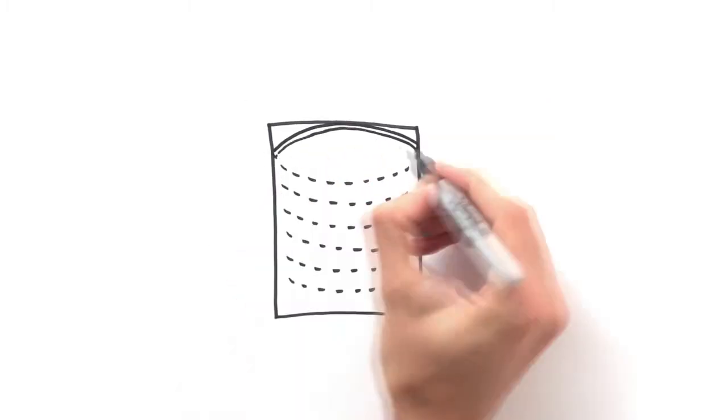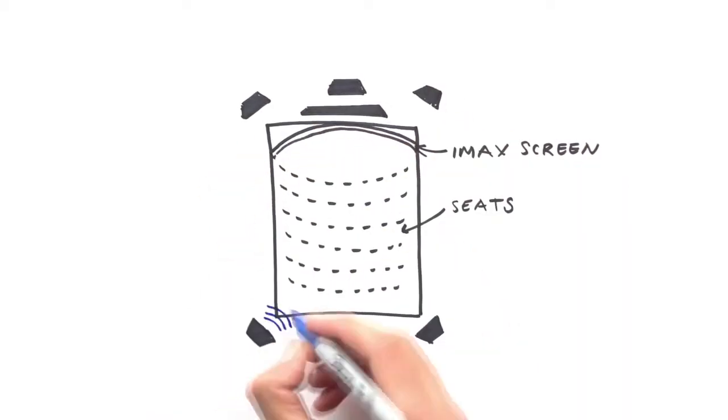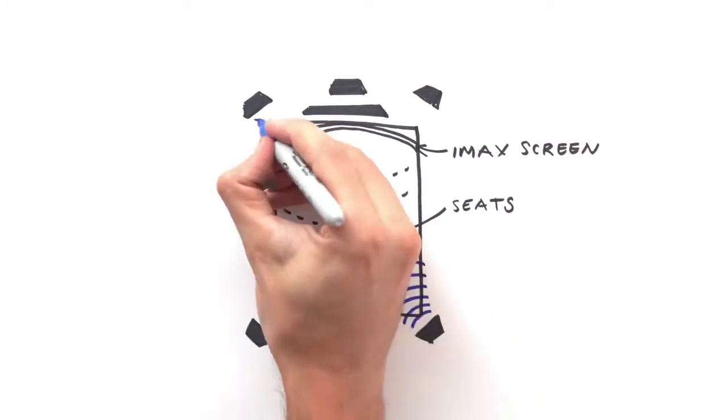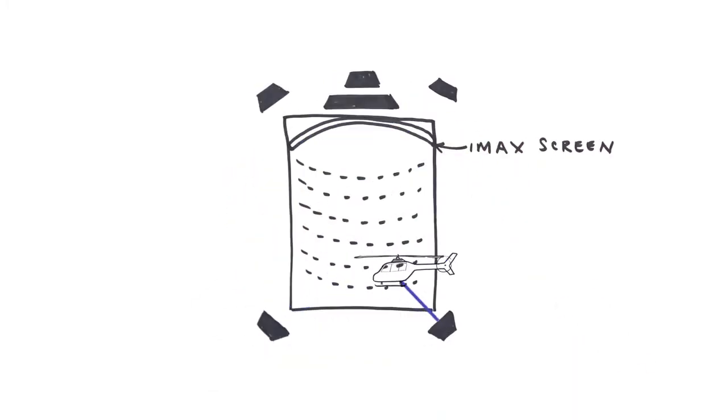But with IMAX, the sound is designed in a completely different way. No matter where you sit in an IMAX theater, you hear every detail of every sound recreated just like the filmmaker intended. The laser aligned speakers are positioned and aimed in a way that enables you to pinpoint the intended locations of sounds.